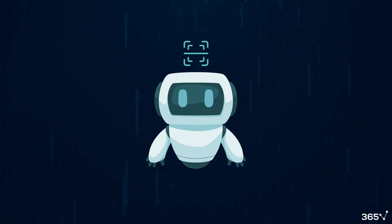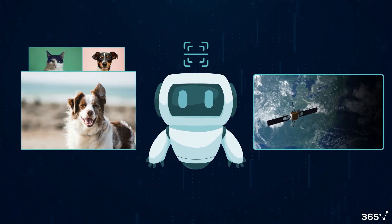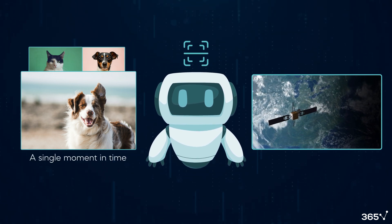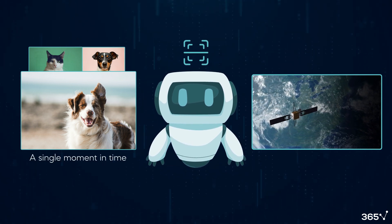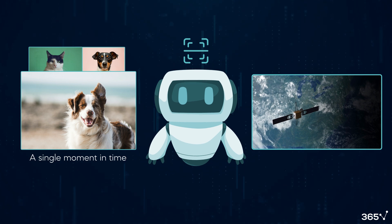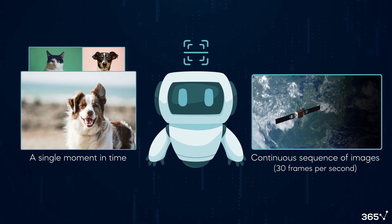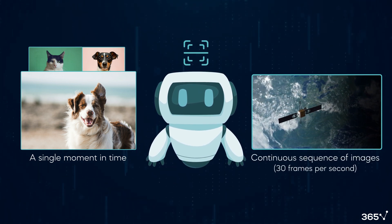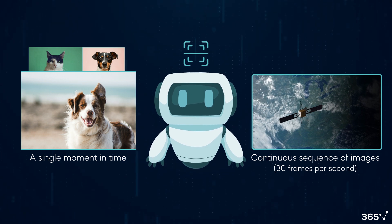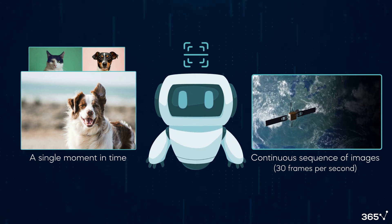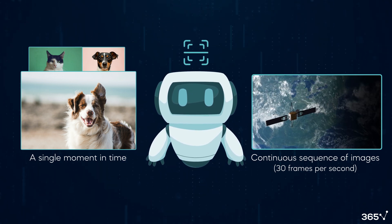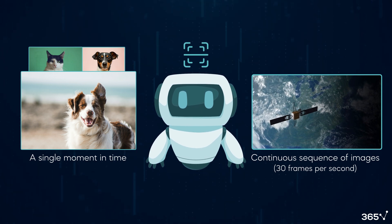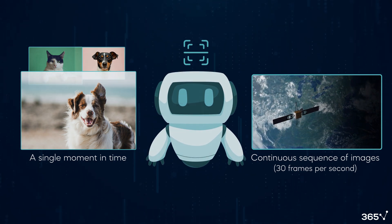To do that, computers consume input through images and videos. Images are simpler because they capture a single moment statically. Conversely, videos are more complex, appearing as continuous sequences of images — for example, 30 frames per second — that require processing. The computer must analyze each frame and understand its context and continuity.